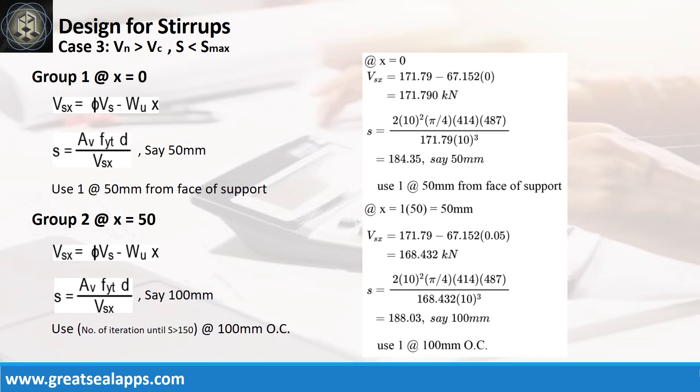For group 3 at x equals 150 mm, the web strength at x equals 150 mm is 168.432 kN, with spacing at 188.03 mm, use 1 at 100 mm.